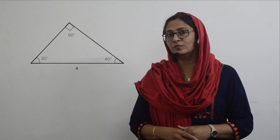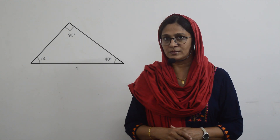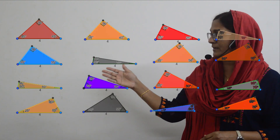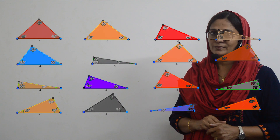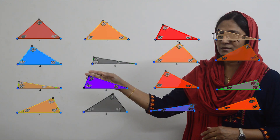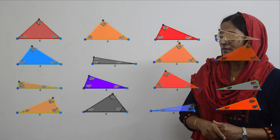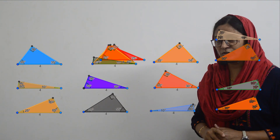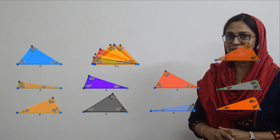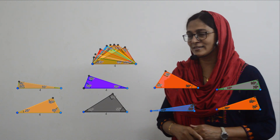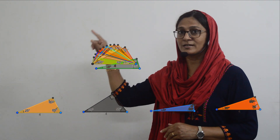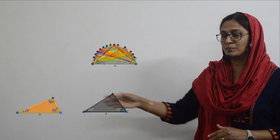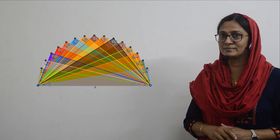Now we know that this is not the only right triangle with hypotenuse four centimeters — we can draw many others. Look at the triangles I have drawn; all these are right triangles with hypotenuse four centimeters. See an interesting fact: put the base of all the right triangles together and you will notice that all the third vertices form a circle around that hypotenuse. The hypotenuse can be taken as the diameter of that semicircle. See this animation done in GeoGebra.